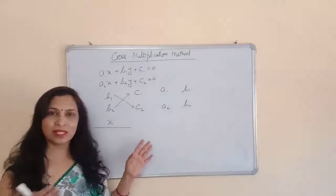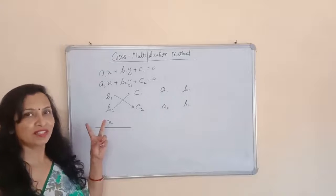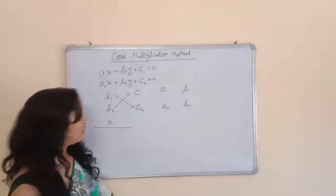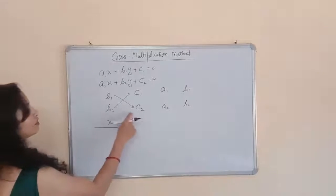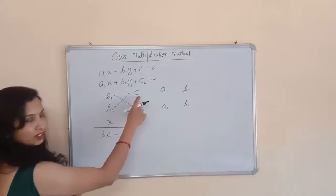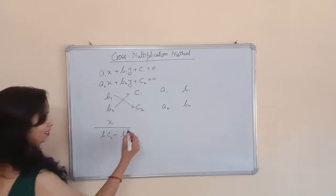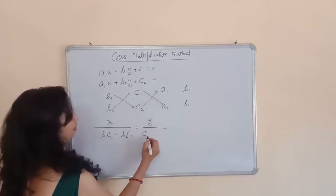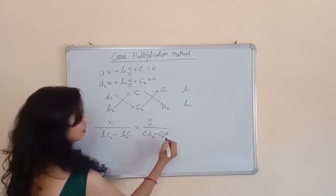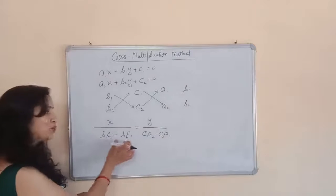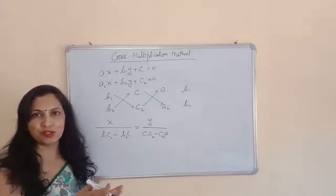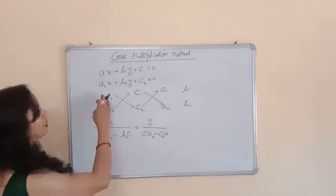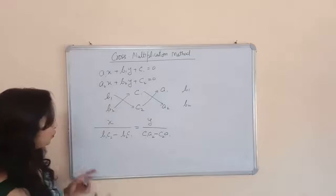If these values have a negative sign, then you will write this value with their sign. So x upon b1c2 minus b2c1 is equal to y upon this into this minus this into this, that is c1a2 minus c2a1. You don't need to memorize these values b1c2 minus b2c1, because you will do any question by this method by writing the numerical values directly. There is no need to learn these.